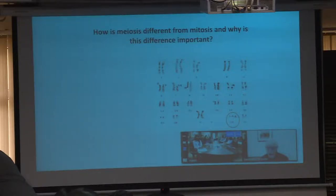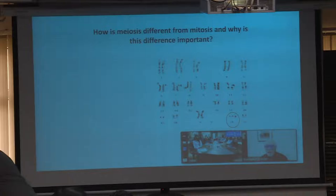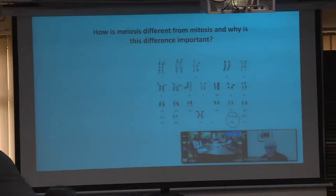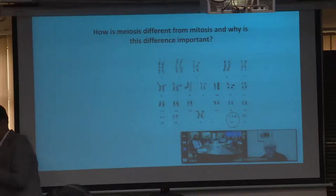This banding pattern is identical from one cell to another across all cells in every organism, making it easy to tell if a band is missing. One thing you can see in this picture is something circled on chromosome 21 that's different from all the other chromosomes — what do you notice?